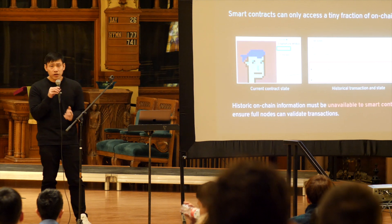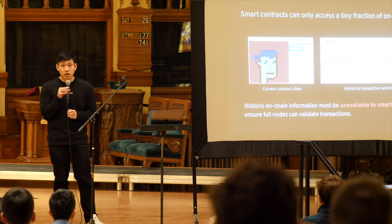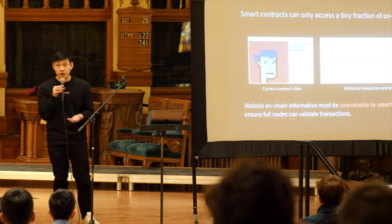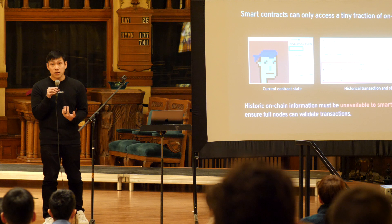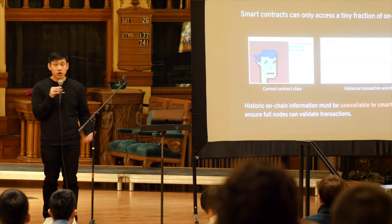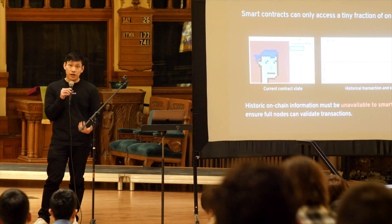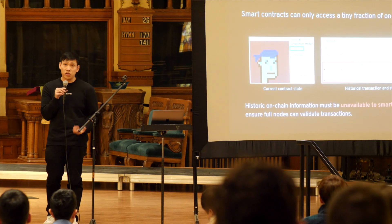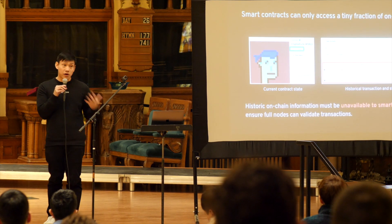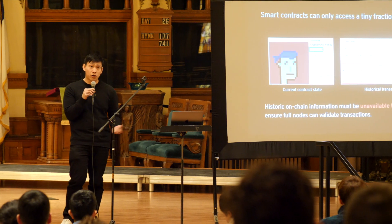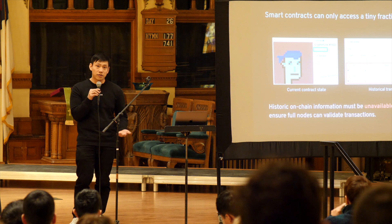Unfortunately, all of this rich historic on-chain information can't be made available to smart contracts due to a fundamental trade-off Ethereum has to make. If smart contracts could access this information, that would force all validating full nodes to keep it in random access, making it very challenging to run a full node and hurting the decentralization properties of Ethereum or any other blockchain. I don't think you can really get around this constraint.